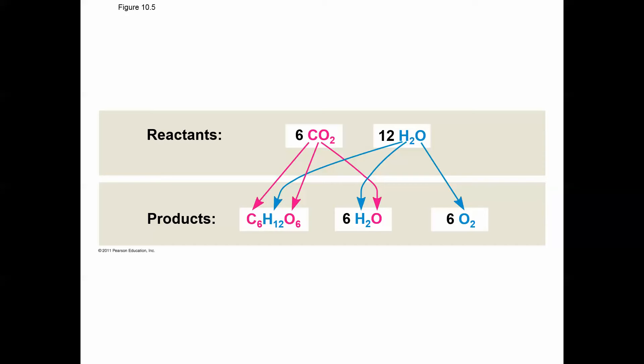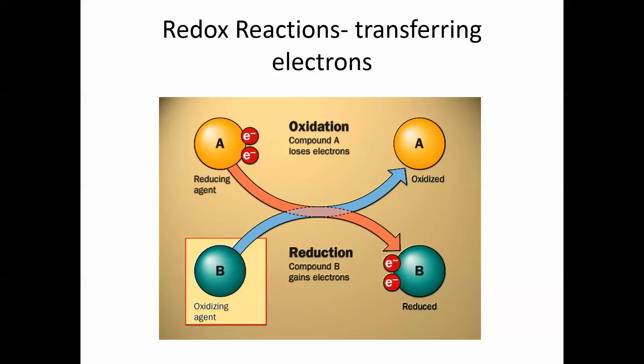In this process, we're going to reduce CO2 into glucose and we're going to oxidize water, forming oxygen gas. Remember, these reactions involve the transfer of electrons. If you gain electrons, you are said to be reduced; if you lose electrons, you are oxidized. If you're reduced, you tend to become more complicated, with extra hydrogens and electrons attached. If you're oxidized, you tend to be torn apart.